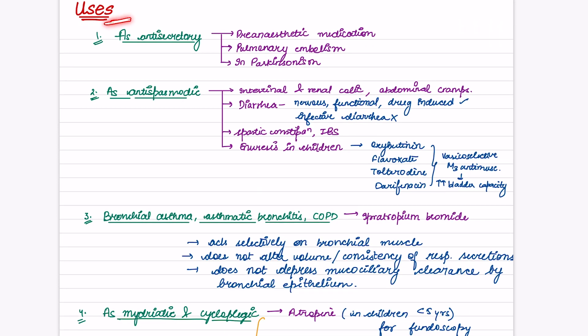Coming to the uses of anticholinergic drugs. As anti-secretory, we need to reduce secretions: pre-anesthetic medication, pulmonary embolism, and Parkinsonism. As antispasmodic: intestinal or renal colic, abdominal cramps. In diarrhea, if it's infective diarrhea it won't work, but if it's nervous, functional, or drug-induced diarrhea, it will act as an antispasmodic. In spastic constipation and inflammatory bowel disease.